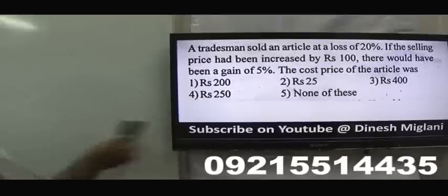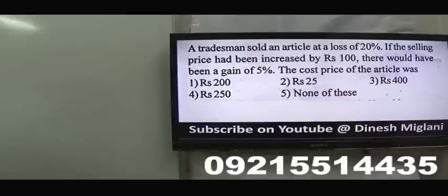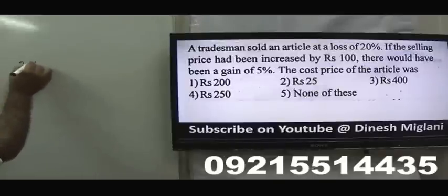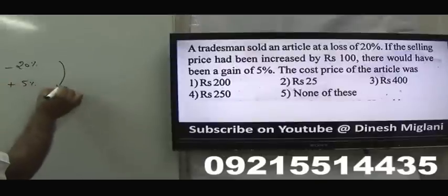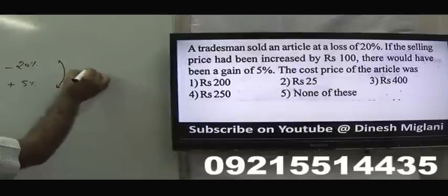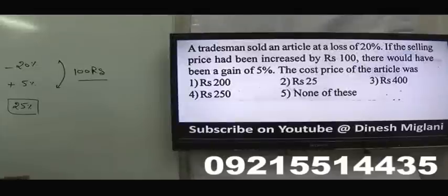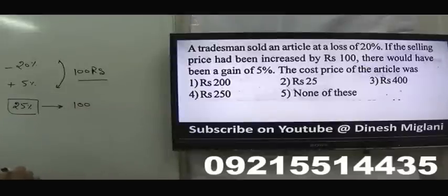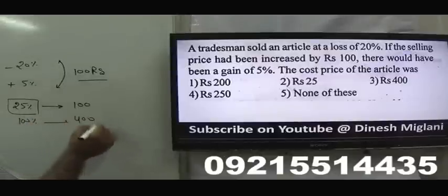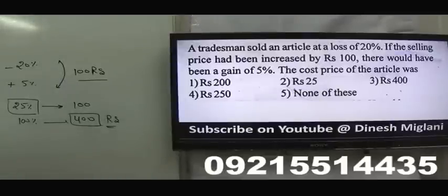A tradesman sold an article at a loss of 20%. If the selling price had been increased by 100, there would have been a gain of 5%. First there was a loss of 20%, now profit of 5%, so the difference of 25% corresponds to ₹100. Therefore 100% = ₹400. Cost price is ₹400.